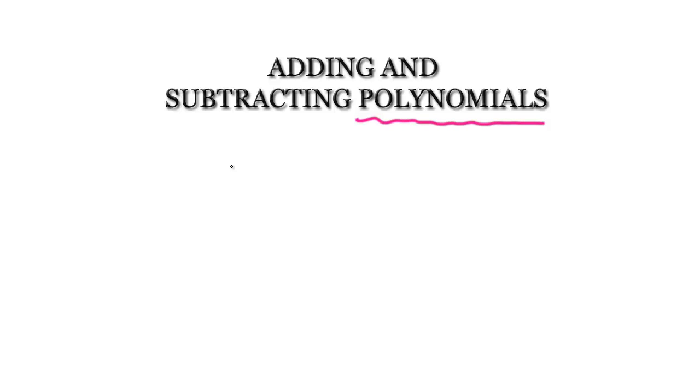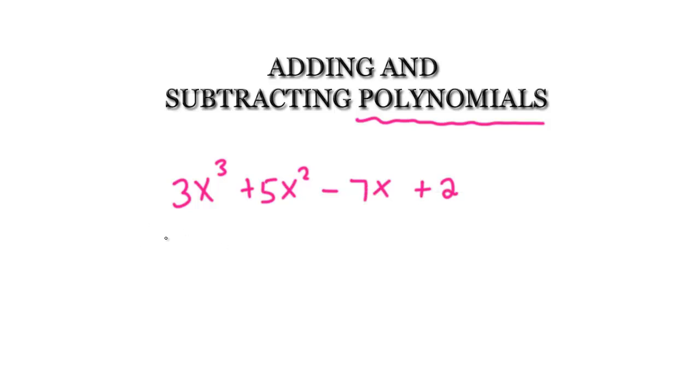Hi, everyone. For this lesson, I'll show you how to add and subtract polynomials. Remember, a polynomial is just an expression consisting of more than two terms. For example, you can have something like 3x cubed plus 5x squared minus 7x plus 2. This would be an example of a polynomial.